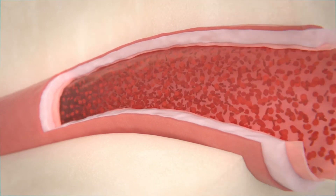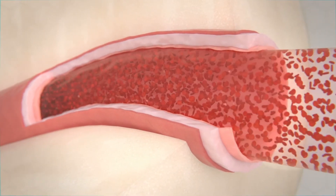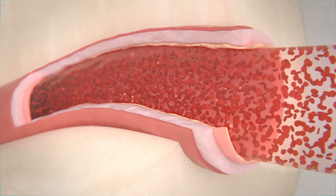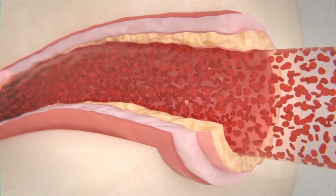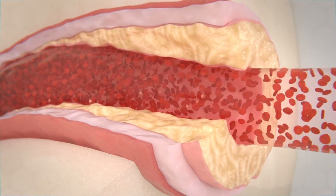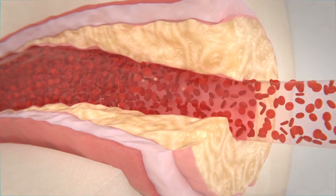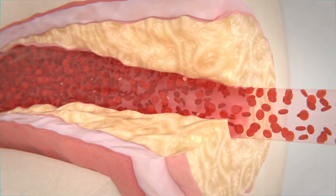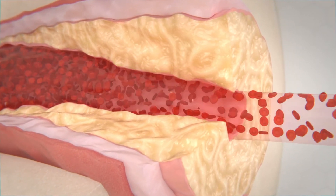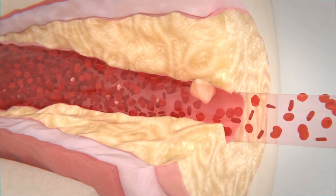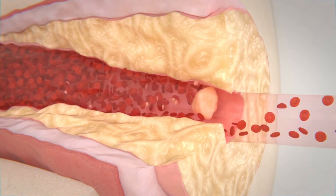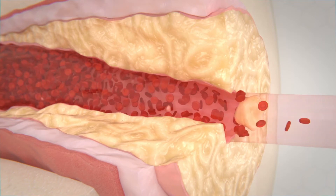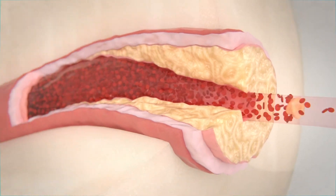Uncontrolled diabetes, high cholesterol, smoking, and high blood pressure damages the inner lining of the carotid arteries. The body responds to this damage by inducing plaque buildup on the inside of the artery. This plaque buildup over time is what leads directly to strokes.